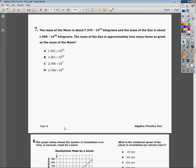The question says the mass of the moon is about 7.349 times 10 to the 22nd kilograms, and the mass of the sun is about 1.989 times 10 to the 30 kilograms. Obviously the mass of the sun is greater. The mass of the sun is approximately how many times as great as the mass of the moon.